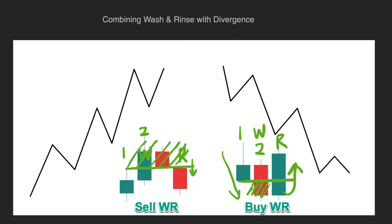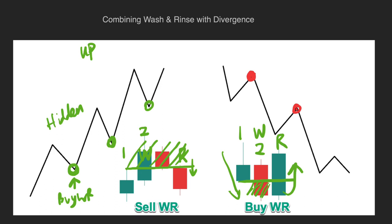Let's talk about buying with the trend. Here we have an uptrend with price going up — we want to spot for a bullish wash and rinse at the pullback points because that's with the trend. At the bullish wash and rinse, what type of divergence do you want? You want to look for hidden divergence — the ideal state is to look for hidden divergence when you are looking for a buy. Same thing on the right-hand side: we are looking for a sell wash and rinse pattern at each high point, and at each high point we want to look for bearish hidden divergence. Then this trade will be a trade that's with the trend.